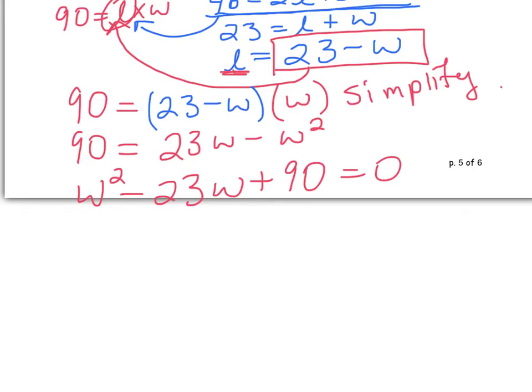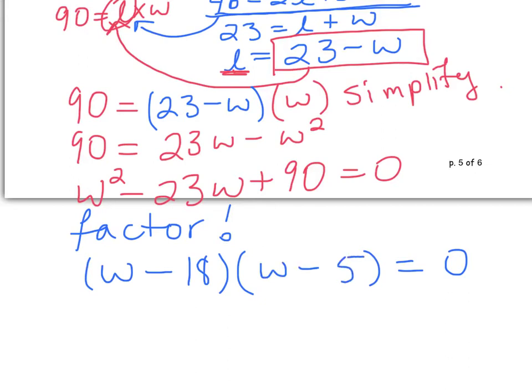So now we have to factor. So now when we factor this, you need to remember how to factor. So think of two numbers that multiply to 90 that are going to add up to negative 23. And that is minus 18 and minus 5. So here we get w equals 18 or w equals 5.